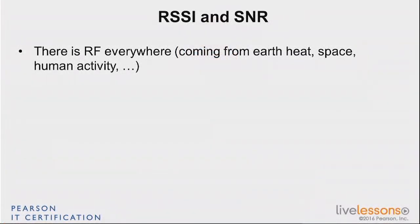Let's move on to the SNR, which is the signal-to-noise ratio. There is RF everywhere — the universe is radiating RF, and that was measured a century ago. There is a clear measure of that energy coming from space. If you look at a 20 MHz channel, that represents about minus 101 dBm.